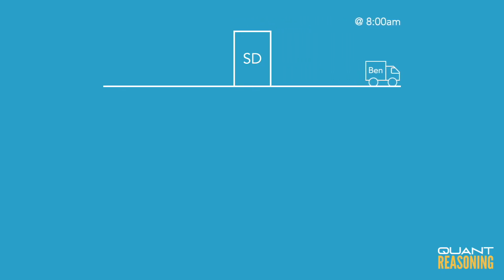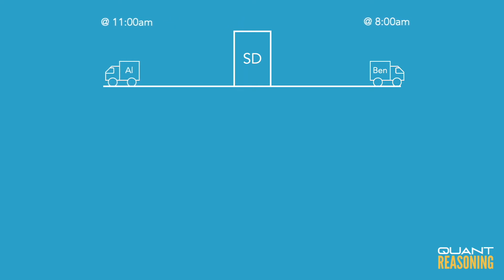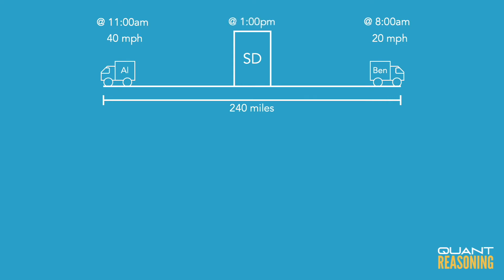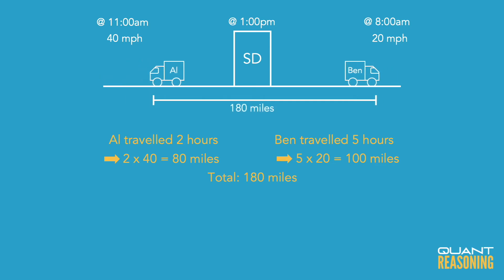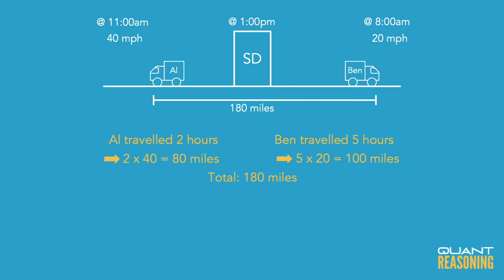We've got Ben driving east from eight o'clock, and then we have Al driving west from 11 o'clock. That means that at one o'clock, Al's been driving for two hours at 40 miles per hour, and Ben's been driving for five hours at 20 miles per hour. That's 80 and 100 for 180. And we know that each additional hour, they'll be adding a total of 60 miles.